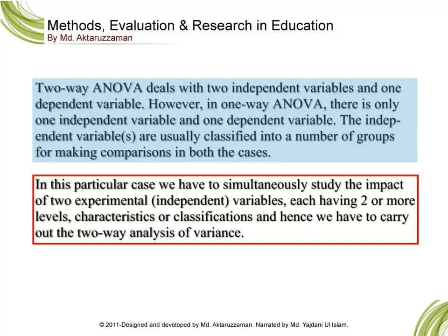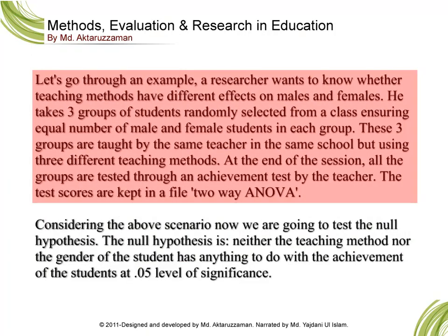Let's go through an example. A researcher wants to know whether teaching methods have different effects on males or females. He takes three groups of students randomly selected from a class, ensuring equal numbers of male and female students in each group. These three groups are taught by the same teacher in the same school but using three different teaching methods.